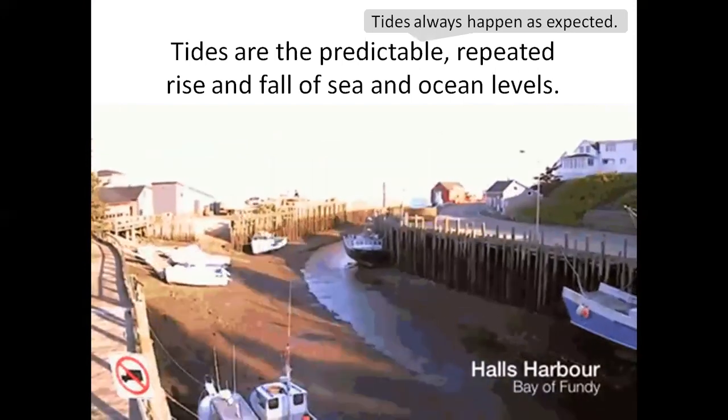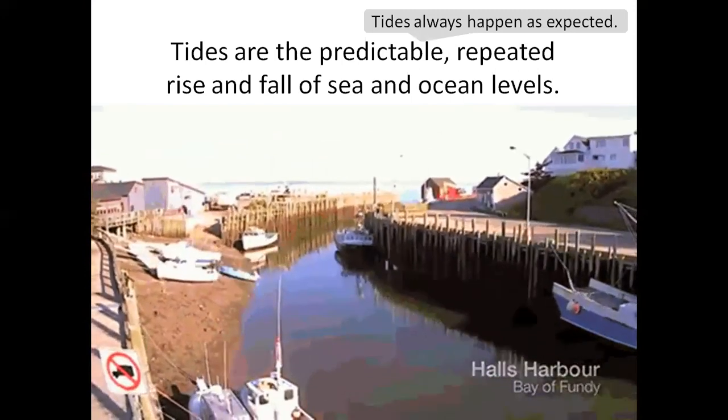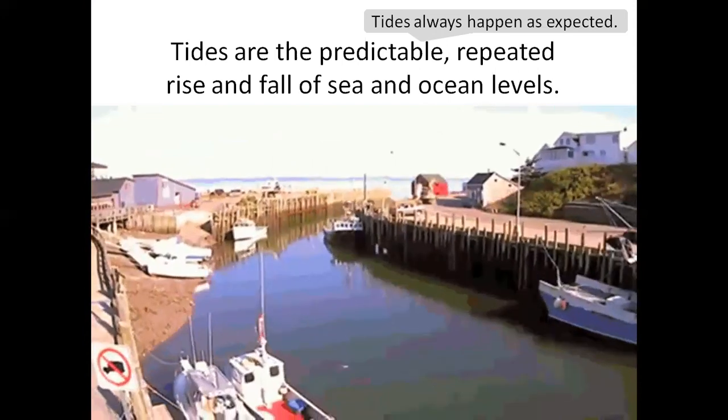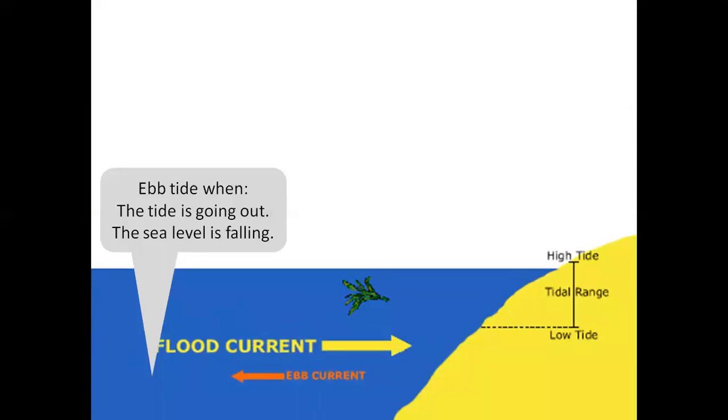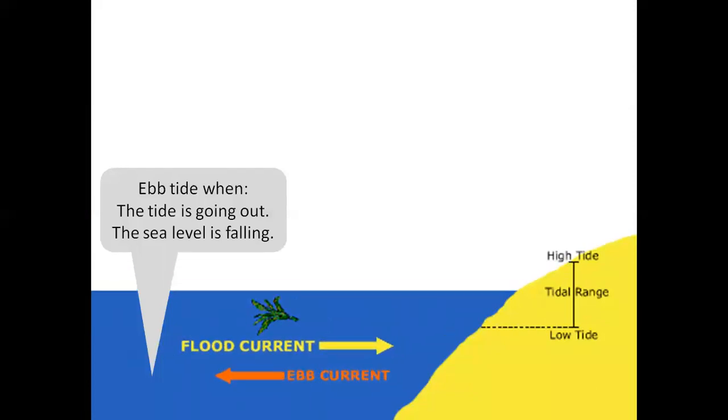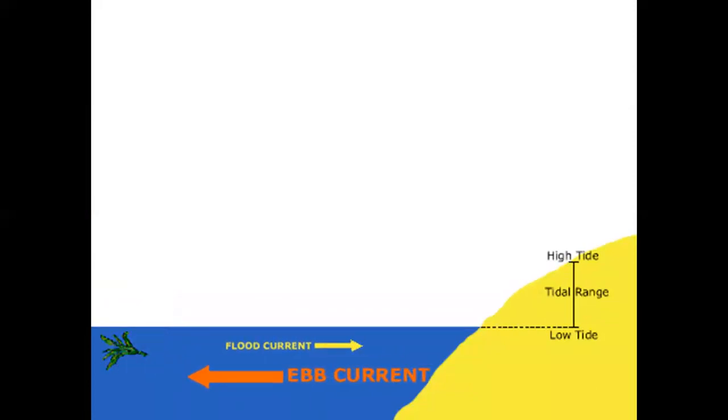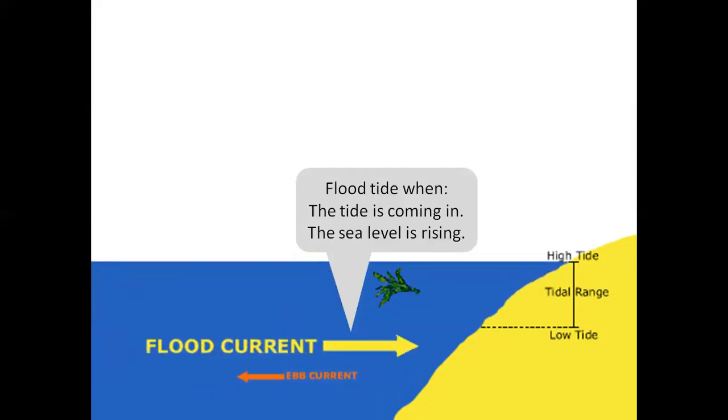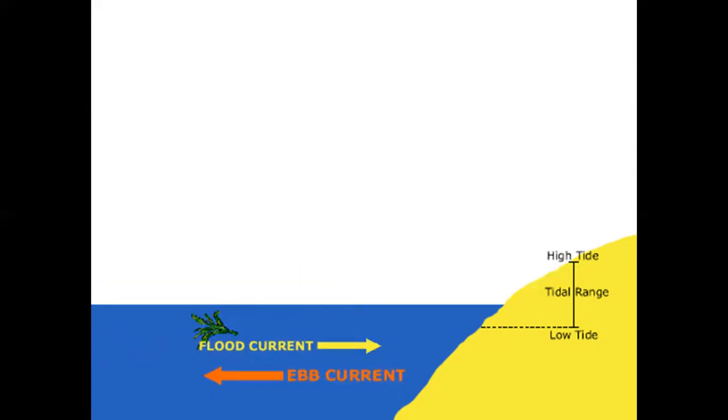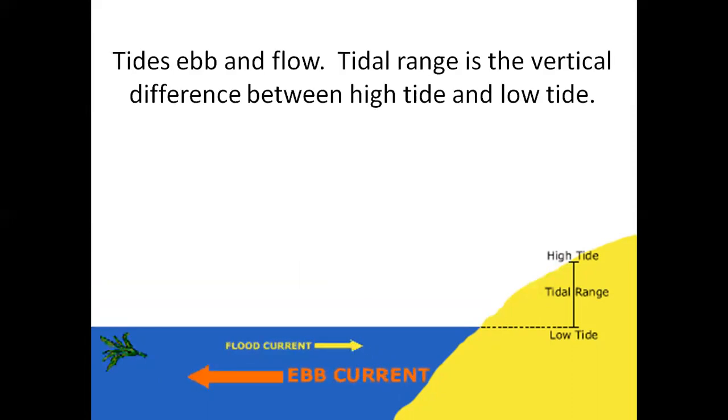Predictable means tides always happen as expected. The Bay of Fundy is in Canada. The ebb tide is when the tide is going out and the sea level is falling. The flood tide is when the tide is coming in, the sea level is rising. Tides ebb and flow.